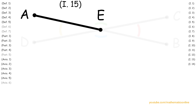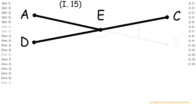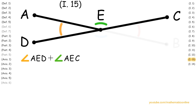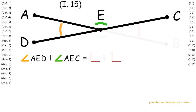First, looking at the straight line AE and the straight line DC, we can see that they form two adjacent angles. Therefore, by Proposition 13, angle AED plus angle AEC are congruent to the sum of two right angles.